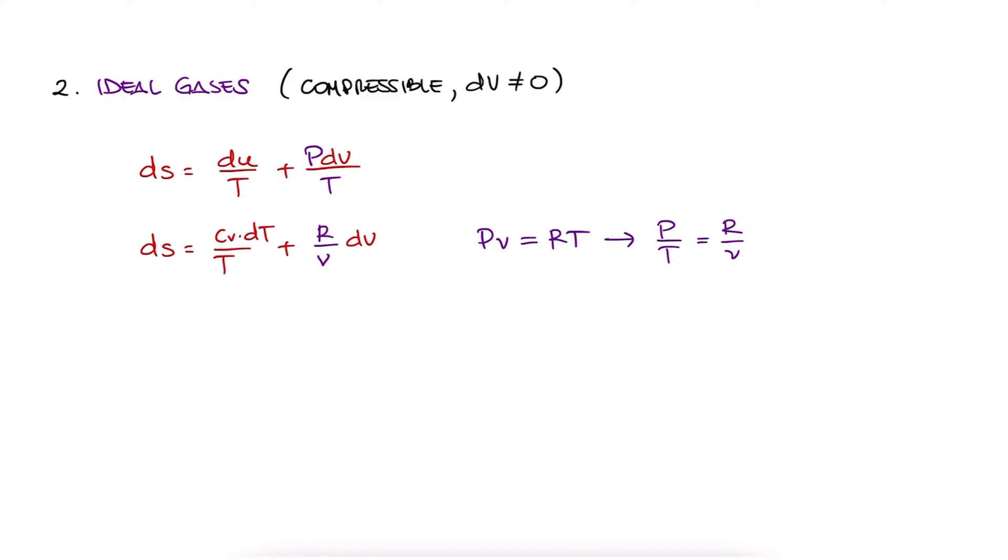ds is cv over T dT plus R over v dv and the integral s2 minus s1 is the integral from 1 to 2 of cv over T dT plus R natural logarithm of v2 over v1.